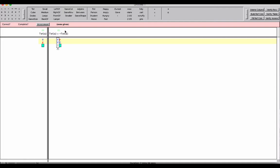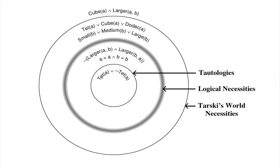More specifically, we're talking about a truth-table-true or tautologically true sentence — a tautology, or a truth-functionally true sentence. We have an idea of what a tautology is. We can see, given the way the circles are nested, that all tautologies are logical necessities, but the converse does not hold — we won't say that all logical necessities are tautologies.